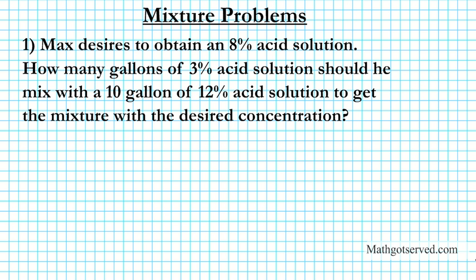Hey there students, on this clip we're going to be going over three examples on mixture problems. So let's go ahead and take a look at the first example. Example number one. It says Max desires to obtain an 8% acid solution. How many gallons of 3% acid solution should he mix with 10 gallons of 12% acid solution to get the mixture with the desired concentration?